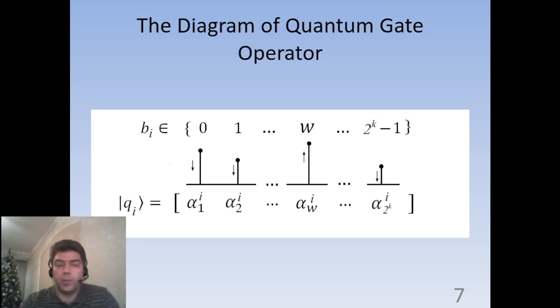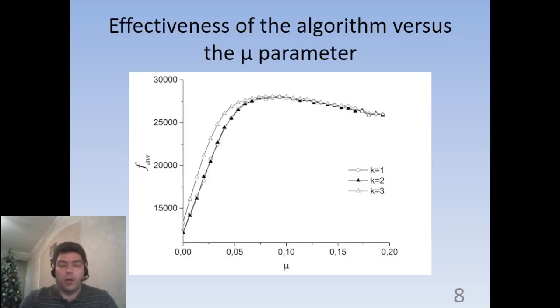The algorithm can be illustrated by the scheme you see now on your screens. If, in the result of the quantum measurement of the state, retrieved values of omega are like 0, 1 and so forth, only the probability amplitude increases in accordance to the algorithm. The average fitness function values of the best population individual as a function of parameter mu is shown in this graph for different numbers of quantum system states.